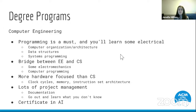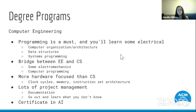In computer engineering you'll learn about clock cycles, memory, how that memory is constrained in your computer, and instruction set architecture — basically the anatomy of your computer, how it's built. In the College of Engineering they really focus on project management, so you'll develop strong skills in documentation — figuring out where to store information your group is working on — and also learn how to go out and find information you don't know, whether looking it up online to complete a project or reaching out to a classmate or someone who's taken the class before.